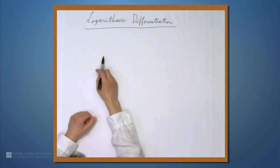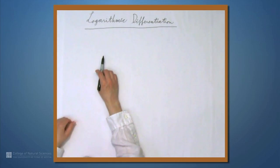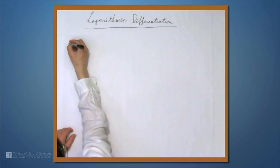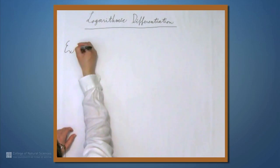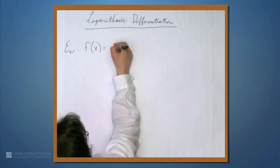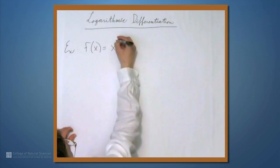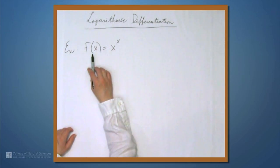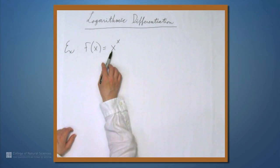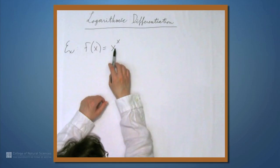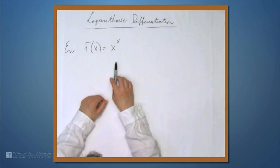We're here at the example table, and in this video, we're going to be looking at logarithmic differentiation. What do I mean by this? Let's start off with an example. Suppose that f equals x to the x, and suppose that we want to differentiate this. This isn't a polynomial. It's not an exponential either. So how can we differentiate this?